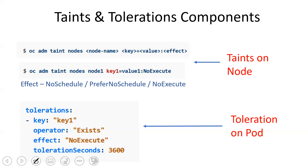To apply toleration on a pod while creating the pod or in the deployment, we can specify key, operator, and effect. The key and value should be the same as given in the taint — the key should match the taint key. The operator can be Equals or Exists. The effect should also match, either NoExecute or NoSchedule. There is also a toleration seconds field: once the pod is scheduled into the node and has toleration, it will only run in that node until that specified time, after which it will exit.